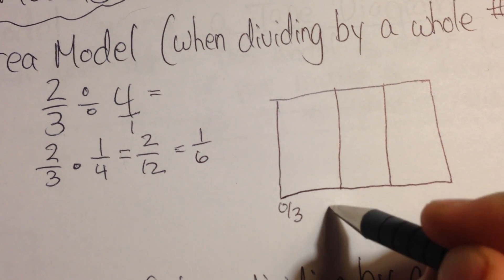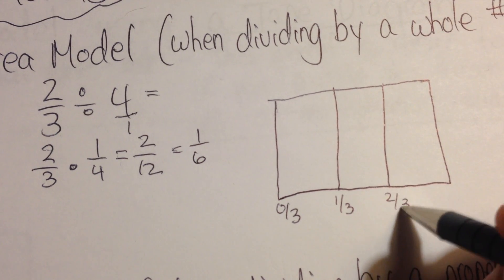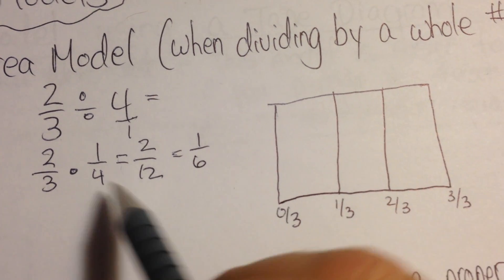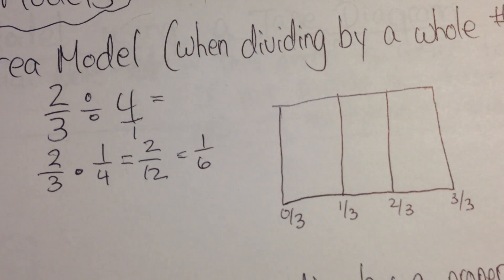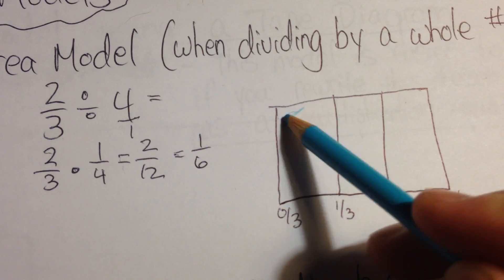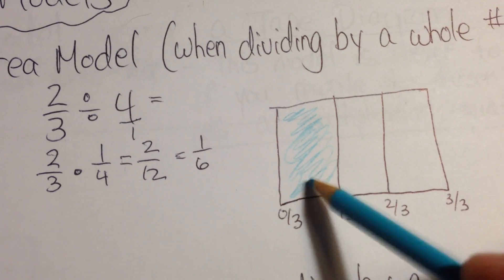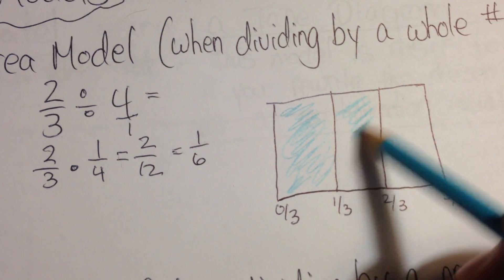So I have 0/3, 1/3, 2/3, and 3/3. And this says that I have 2/3. So I'm going to shade in 2/3. Grab my colored pencil here for a second. So give it a light shade. There's my 1/3. And I have 2/3.